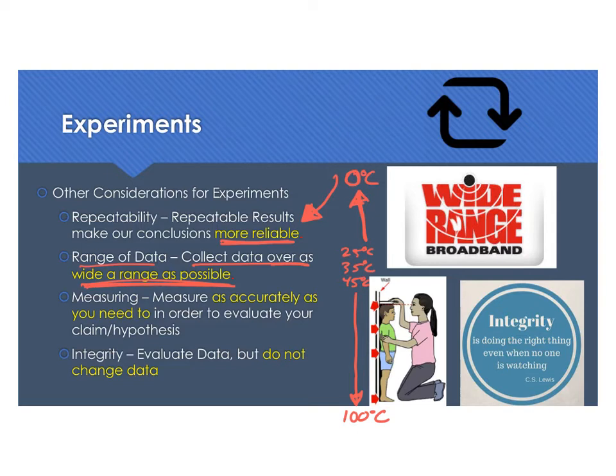Third thing we want to consider about experiments is how we are measuring. We want to measure as accurately as we need to in order to evaluate our claim or hypothesis. That might involve us getting a better tool or sometimes using a worse tool to be faster so that we can get the data that we need. We only want to measure as accurately as we need to in order to evaluate our claim or hypothesis. We don't want to over measure. We don't want to under measure.